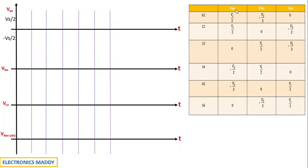Look at the Van column carefully. The voltage starts at Vs/2, remains at Vs/2 during the 1-2 interval, then stays at Vs/2, then goes to 0, then drops to minus Vs/2, remains at minus Vs/2 for two intervals, and then returns to 0. That completes the Van waveform.